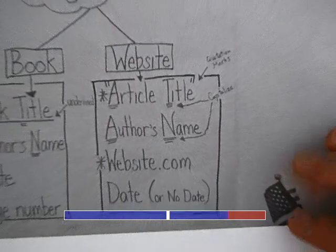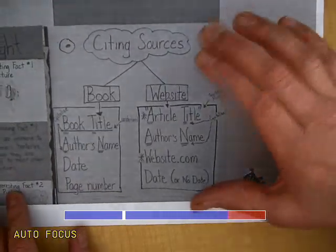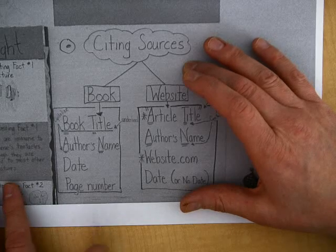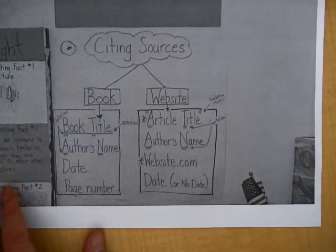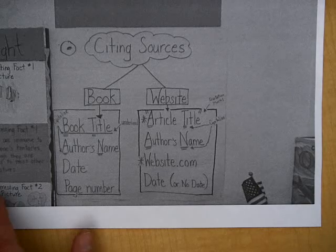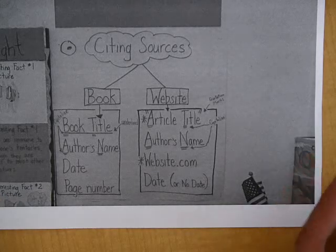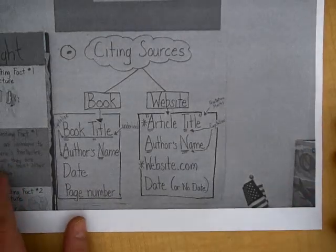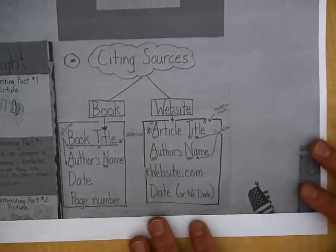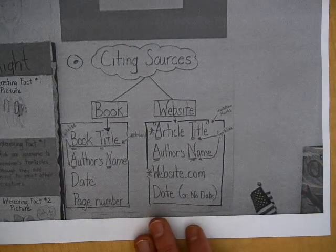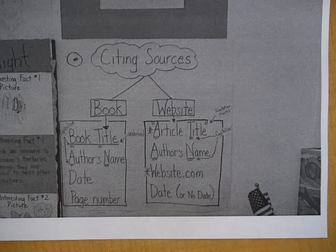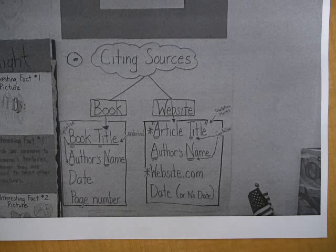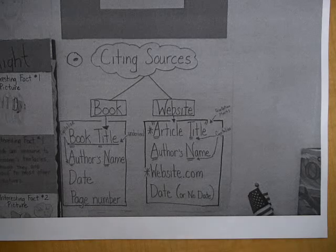Those are the key pieces I wanted to talk to you about with citing sources. Once you find some good information, you put the information in your own words — you do not take it directly from the book or the website, because that's like stealing. That's like taking someone else's words and using them as your own. So our two targets today are: I can cite my source and say where my stuff came from, and I can find facts about sea animals and put them in my own words. I'm going to shut this off and ask if you have any questions.